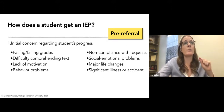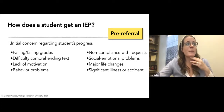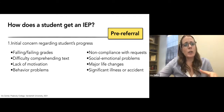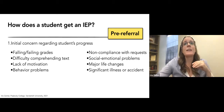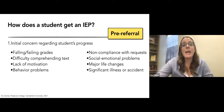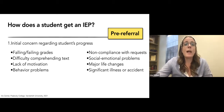Initial concerns could be failing grades, difficulty comprehending text in reading and math, a real lack of motivation to learn or come to small group tables, behavior problems, non-compliance with requests, social-emotional problems, a major life change, or an illness or accident. Any of these things would catch your attention.